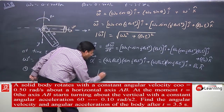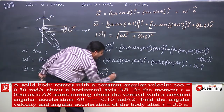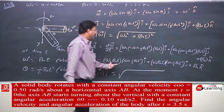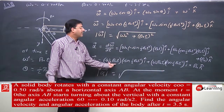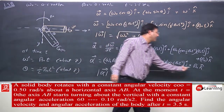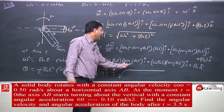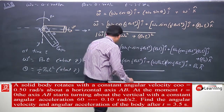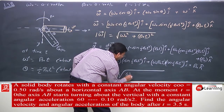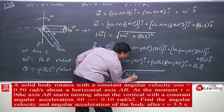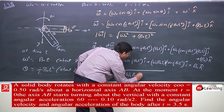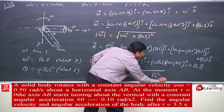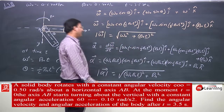Modulus of angular acceleration jab hum karenge: under root of i cap component squared plus j cap component squared plus k cap component squared. i cap aur j cap mein sin square aur cos square milke 1 ho jayega, so the result is square root of (omega naught beta naught t) whole square plus beta naught square. This is the modulus of angular acceleration.